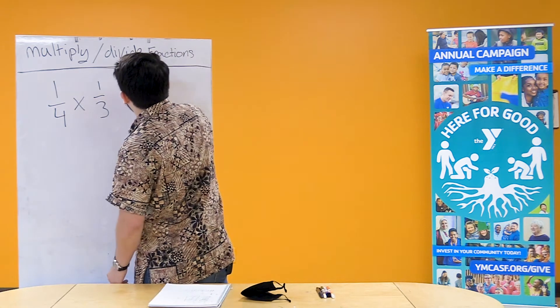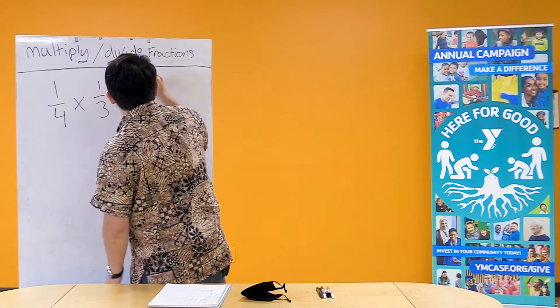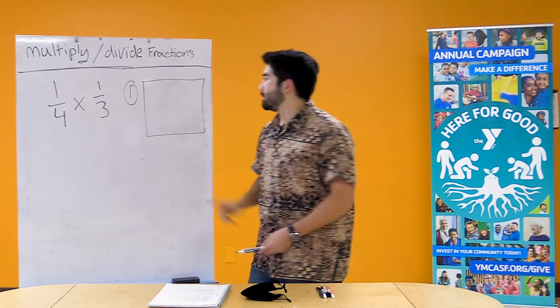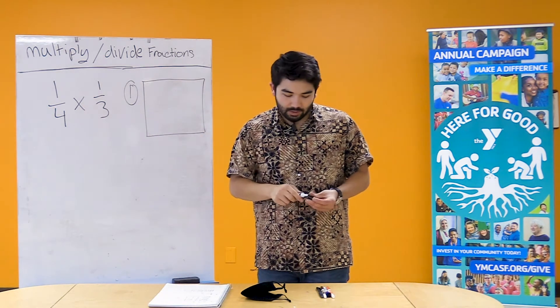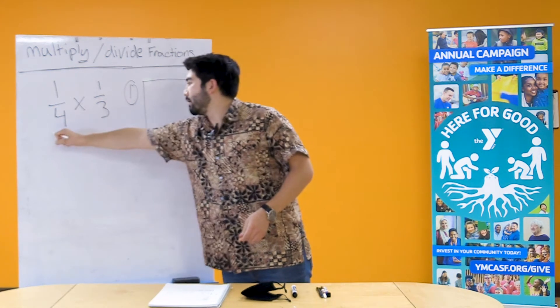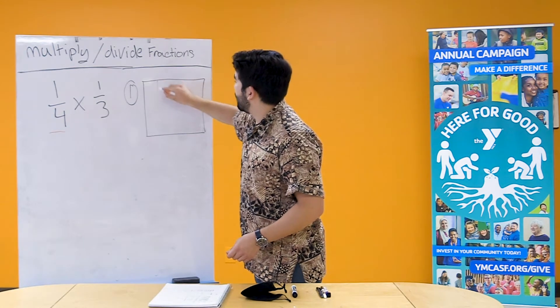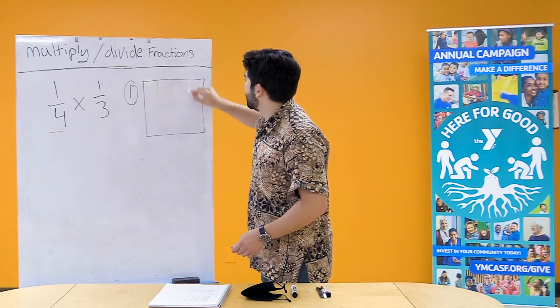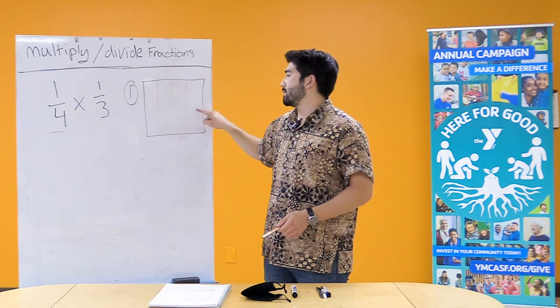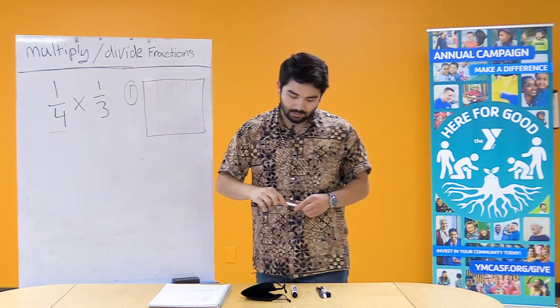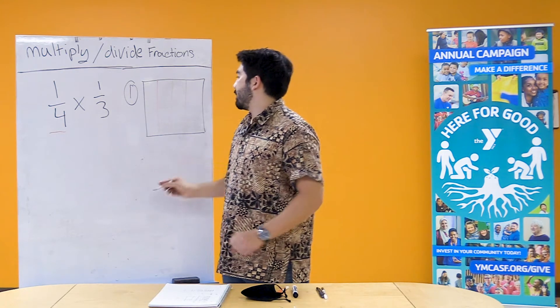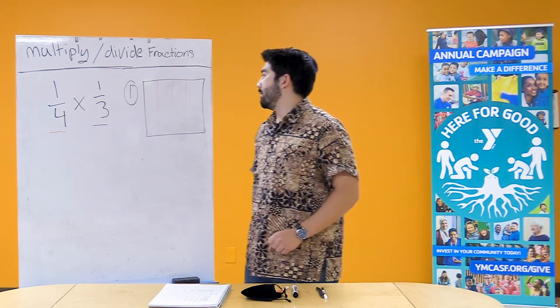What I'm gonna do is first draw a box that's gonna represent one whole. So this box represents one whole and what I'm gonna do first is take an orange marker and this is gonna represent 1/4. So I'm gonna break our box into four different boxes. So now I've turned our one whole into four different parts. So this is gonna represent our 1/4. What I'm gonna do now is take a different color marker. So I have a purple marker and I'm gonna break our box into thirds.